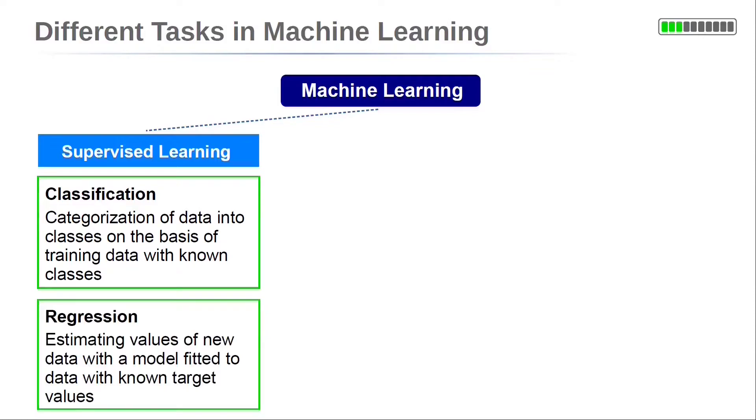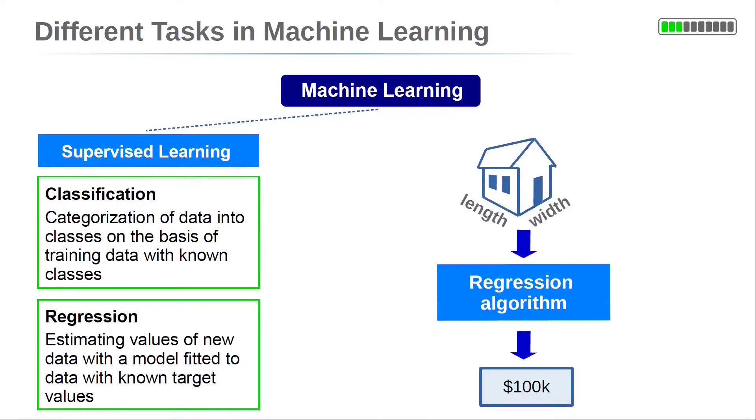Similar to classification is regression. The difference is that the target output now is a numerical value instead of a categorical. An example for regression is an algorithm to estimate real estate prices depending on the house size, its distance to city center and so on. The algorithm is fitted to data with known house prices. Then, the algorithm can estimate the house price of an object with an unknown price, just by its features, size, distance to city center and so on.